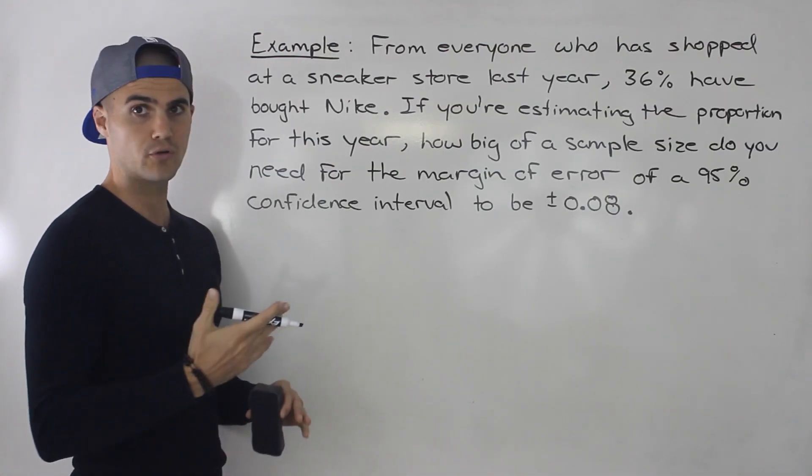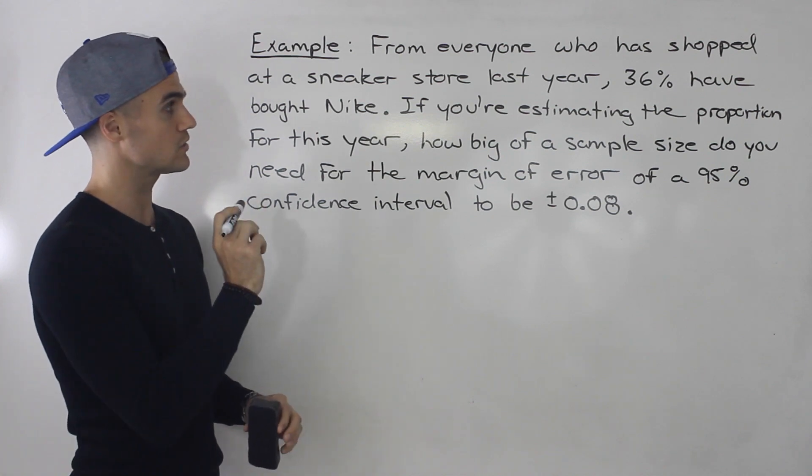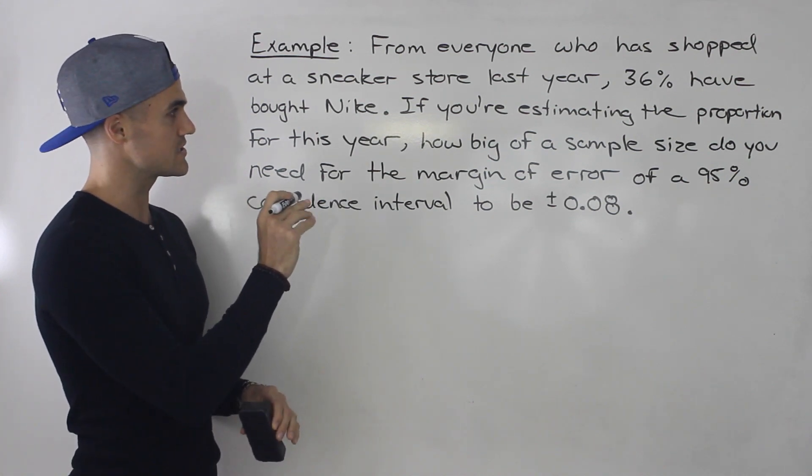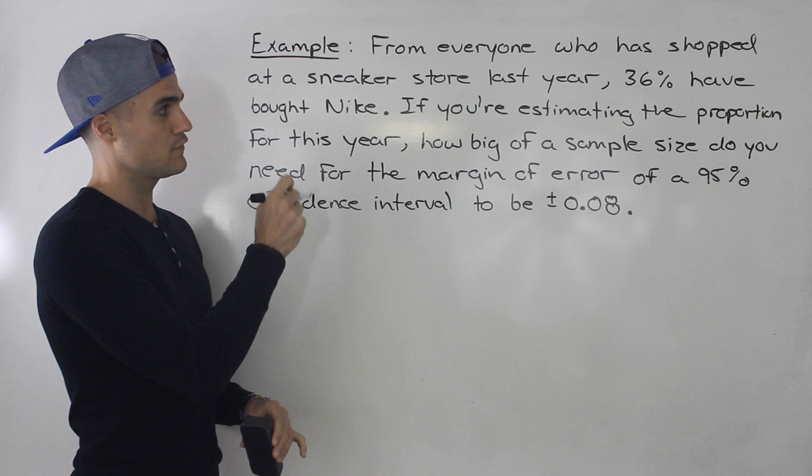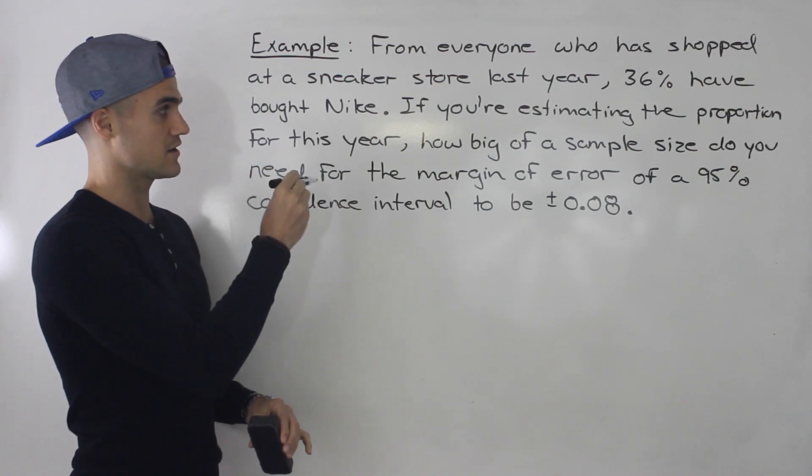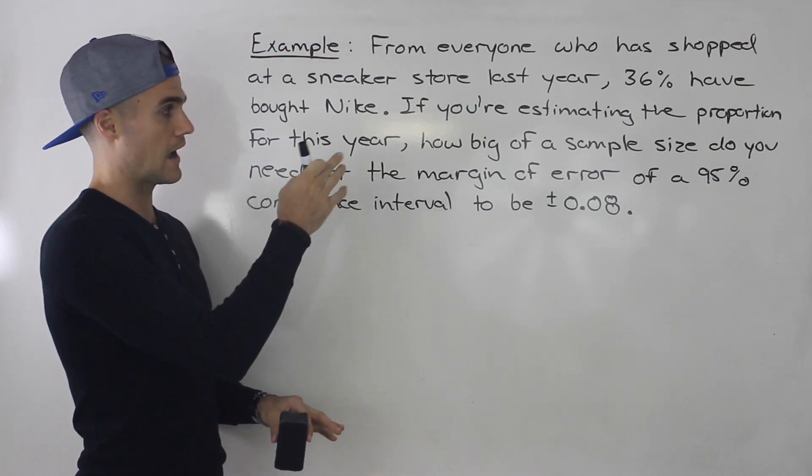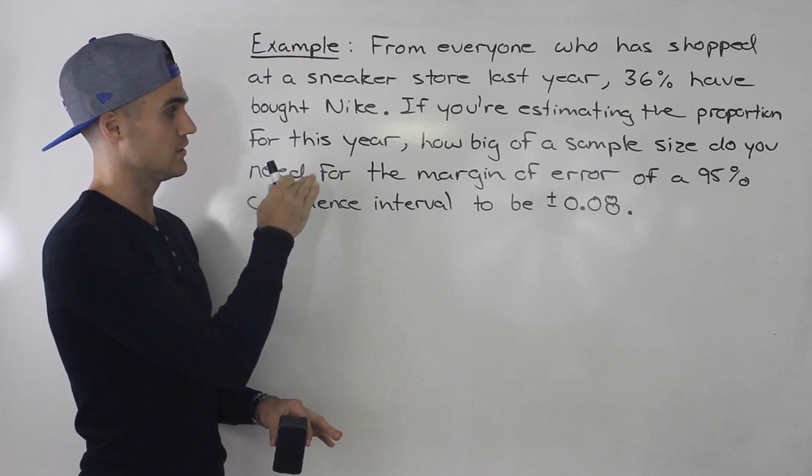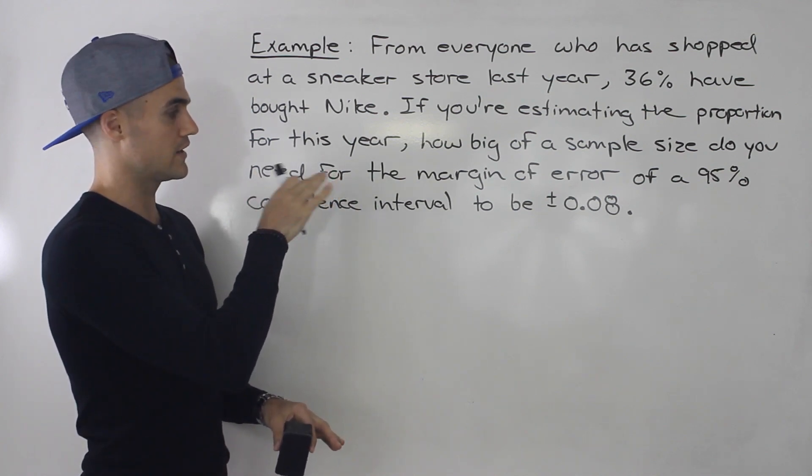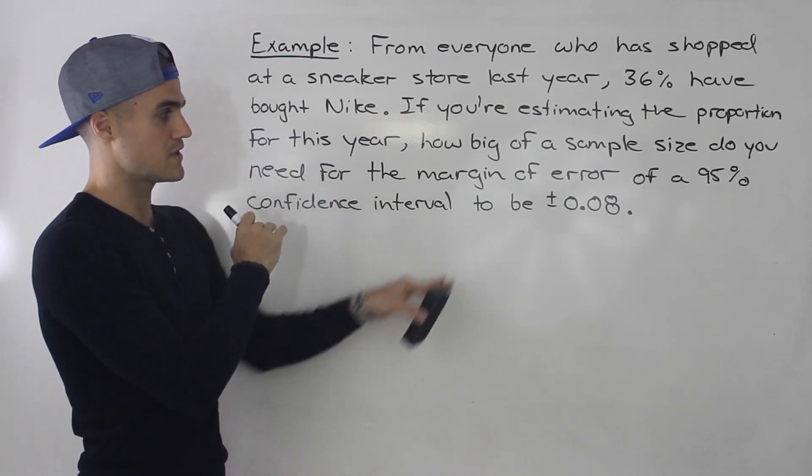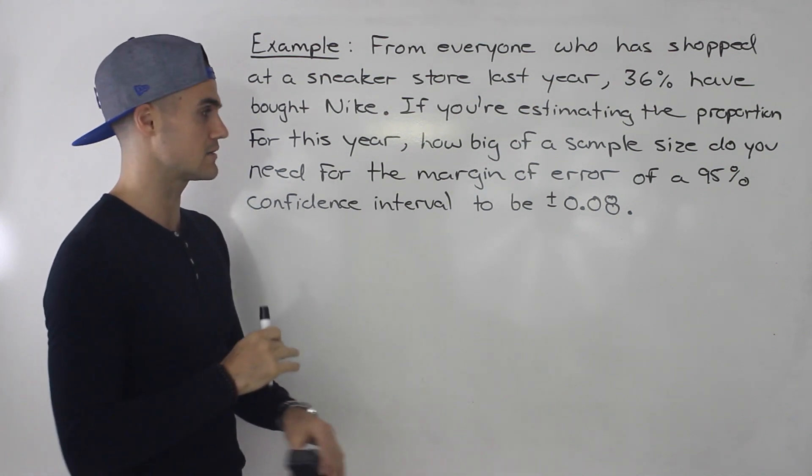So let's do an example here. From everyone who has shopped at a sneaker store last year, 36% have bought Nike. If you're estimating the proportion for this year of people who have bought Nike, how big of a sample size do you need for the margin of error of a 95% confidence interval to be plus or minus 0.08?